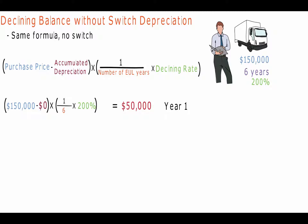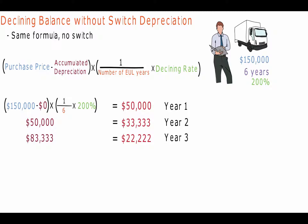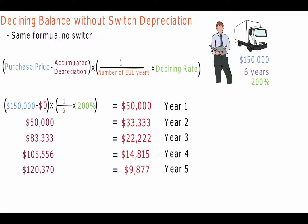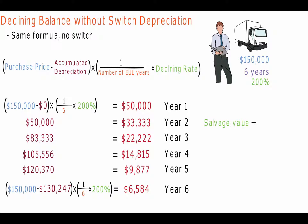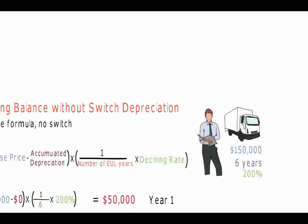Using the calculation, the following depreciation values for the next four years are: Year 2 will equal $33,333; Year 3 will equal $22,222; Year 4 will equal $14,815; Year 5 will equal $9,877. For year 6, at the end of the useful life, the cost minus the accumulated depreciation of $130,247, multiplied by 1 divided by the number of estimated useful years multiplied by the depreciation rate, gives a depreciation value of $6,584. The depreciation from year 1 to year 6 differs substantially and at the end of six years, the truck will still have a salvage value of $13,169.